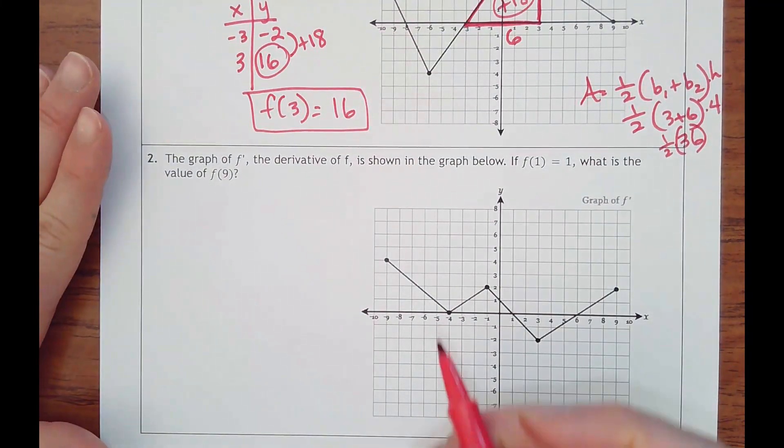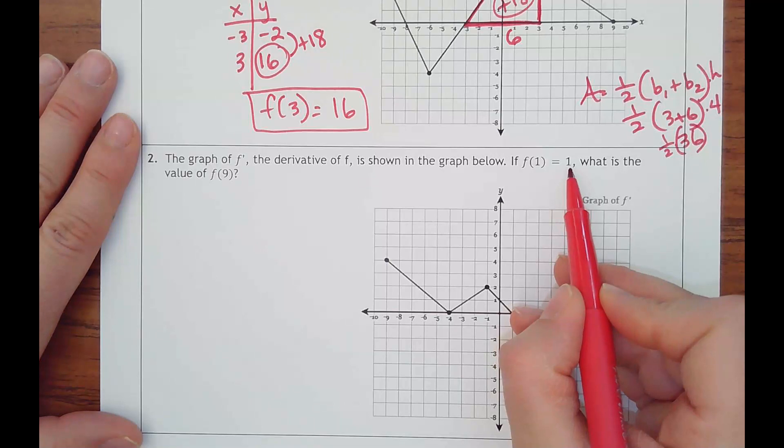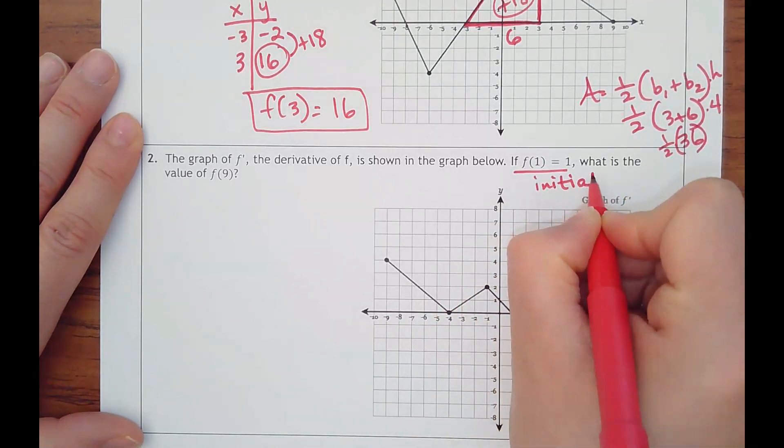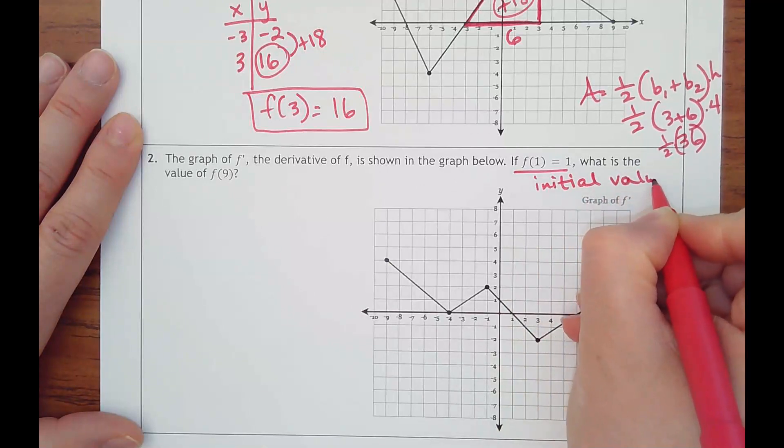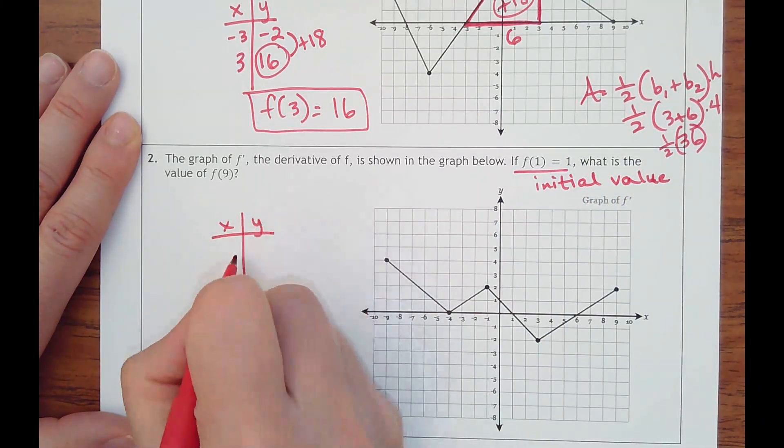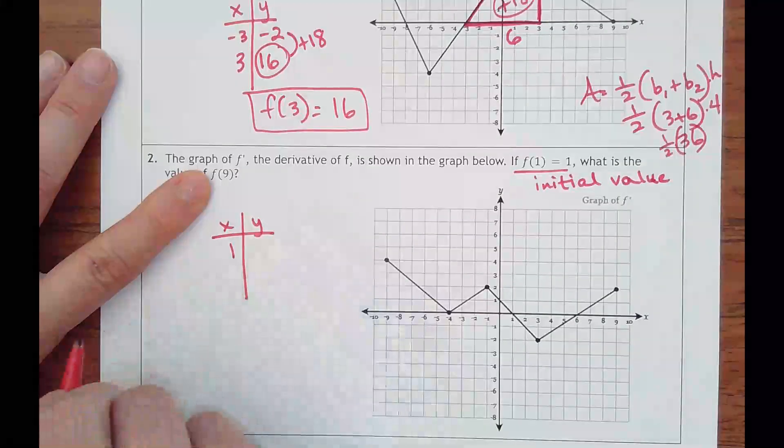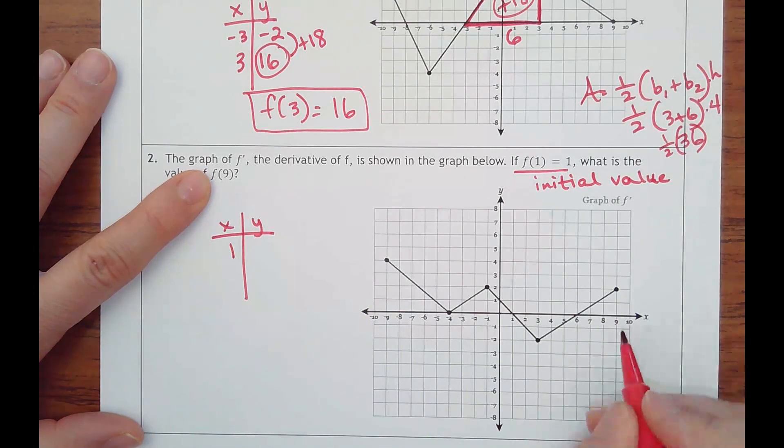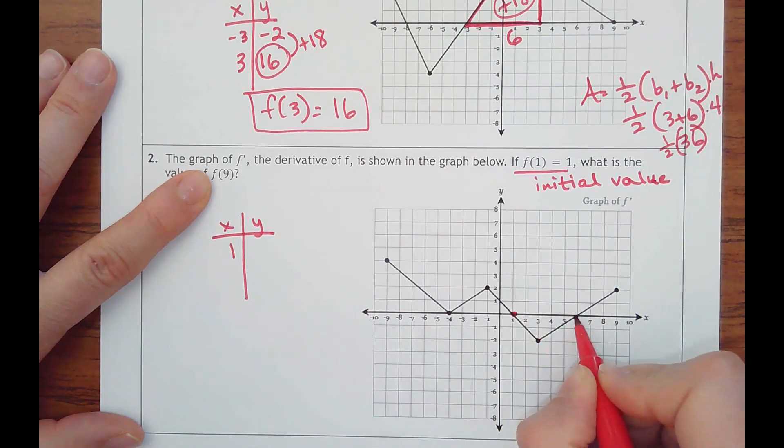Let's try one more. Same setup here. f of one equals one, it's our initial value of our original graph. So let's make a table. We're going to go from one to nine, so I'll probably split that up because I'm seeing, let's make it into two triangles, so I'll do one to six and six to nine.